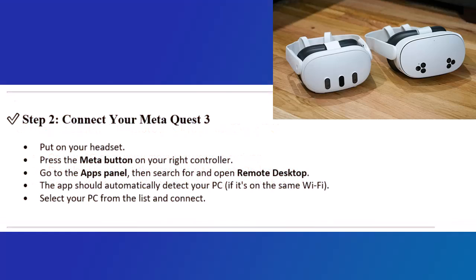Step 2: Connect your Meta Quest 3. Put on your headset and press the Meta button on your right controller. Go to the Apps panel, then search for and open Remote Desktop. The app should automatically detect your PC if it's on the same Wi-Fi. Select your PC from the list and connect.